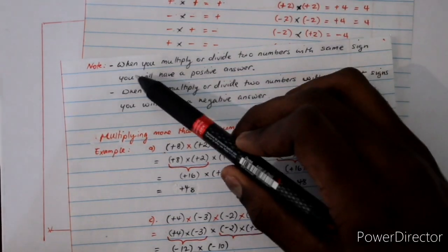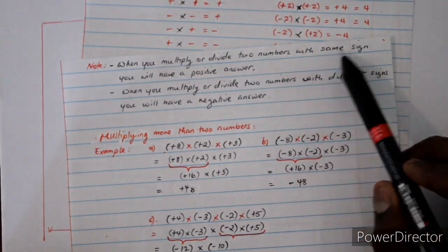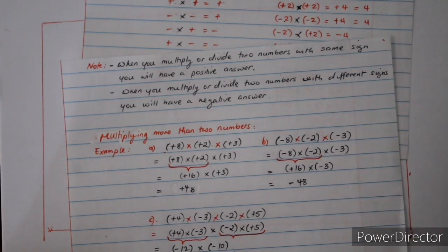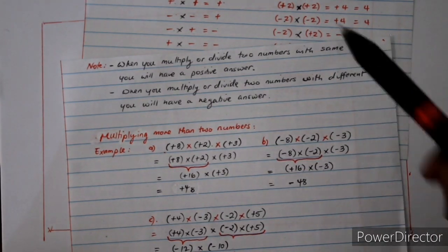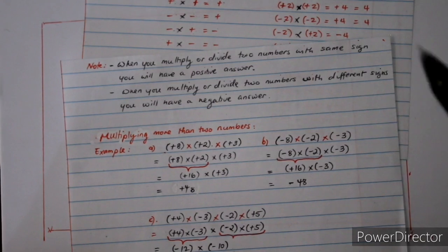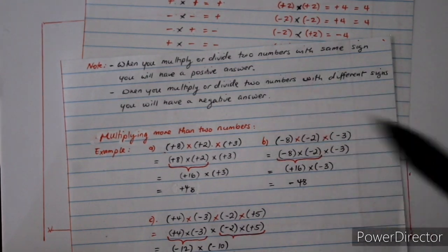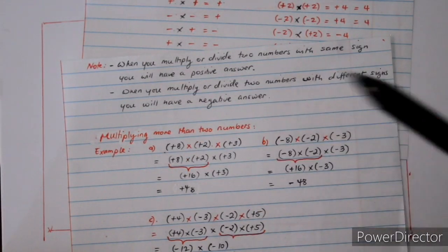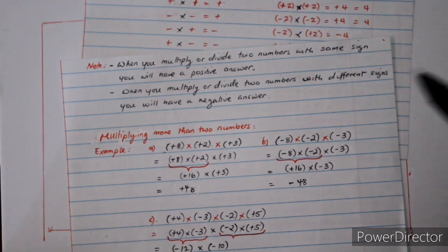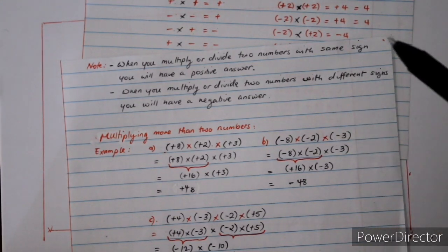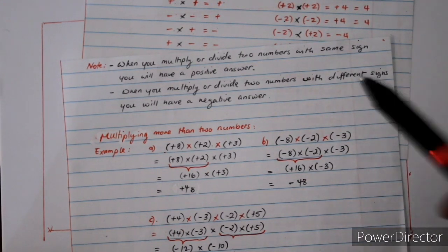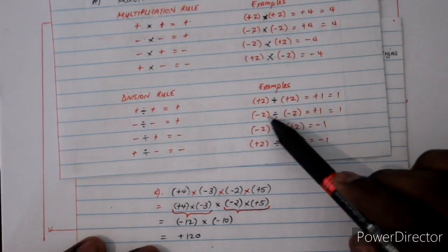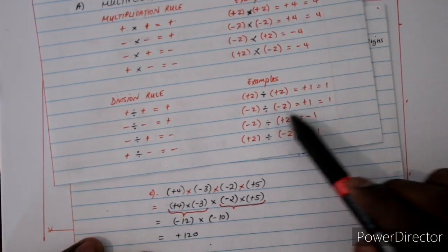Note: when you multiply or divide two numbers with the same sign you will have a positive answer. When you multiply or divide two numbers with different signs you will expect the answer to be negative. These two rules apply when we are working with only two numbers.